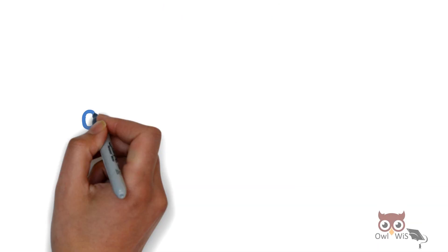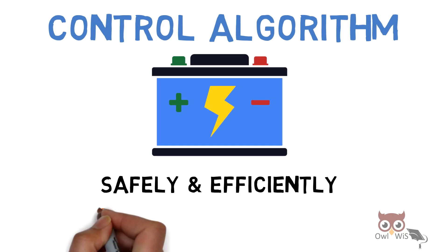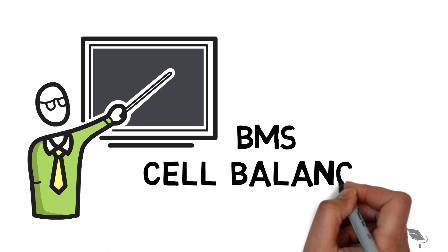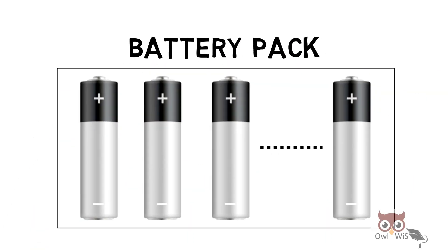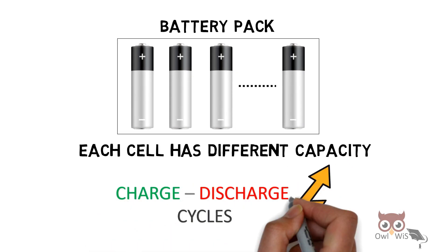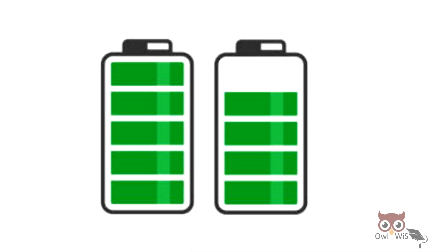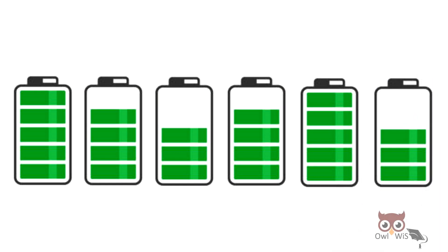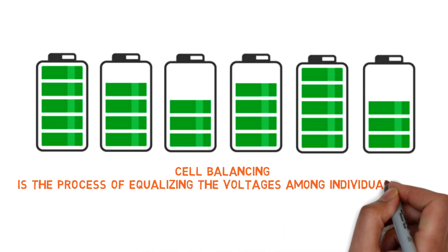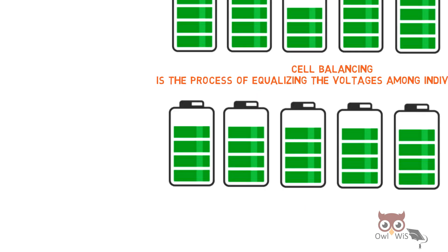Battery management system consists of control algorithms which help to operate the battery safely and efficiently, and one of them being cell balancing. In today's video, let us understand what is BMS cell balancing. A battery pack consists of individual cells and each cell has different capacity, and this capacity goes on changing with the increase in charge and discharge cycles. The state of charge of each cell keeps on dropping with age. Cell balancing is the process of equalizing the voltage among individual cells, so after cell balancing there will be a battery pack with individual cells having almost the same state of charge.